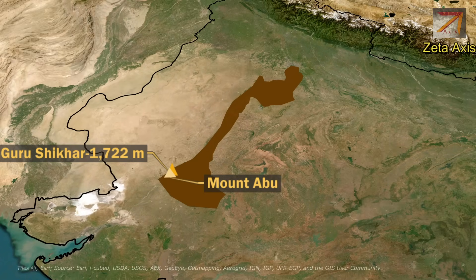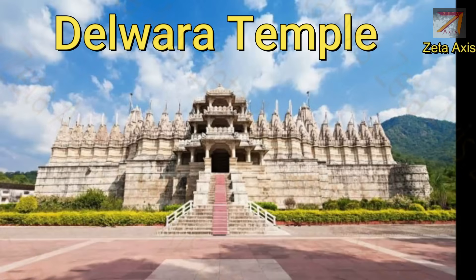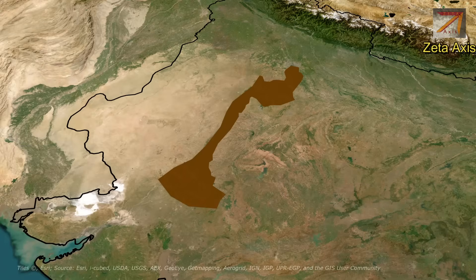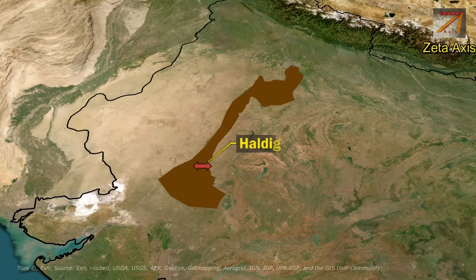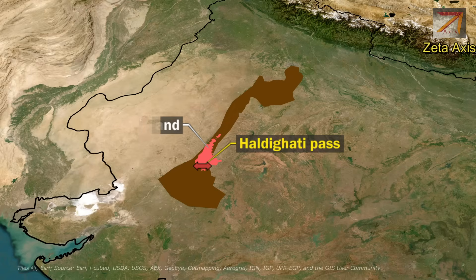Mount Abu has several Jain temples, including the Dilwara Temple — a complex of temples carved out of white marble. The Aravalli range has passes which allow connectivity between the two sides of the Aravalli hills. The Haldighati Pass is a historical mountain pass which connects Rajsamand and Udaipur districts.